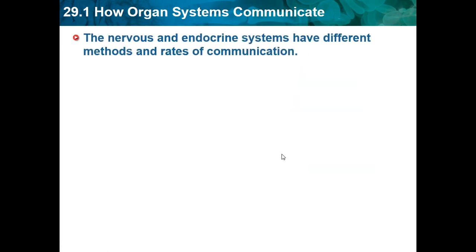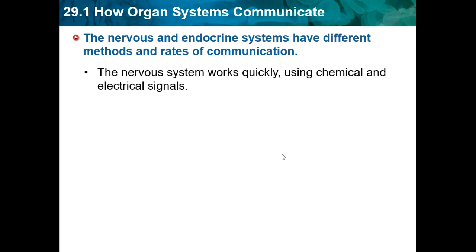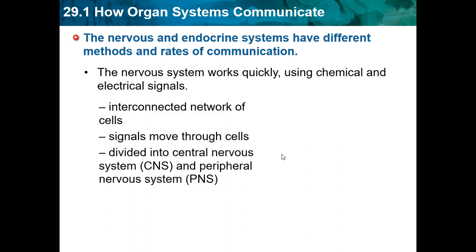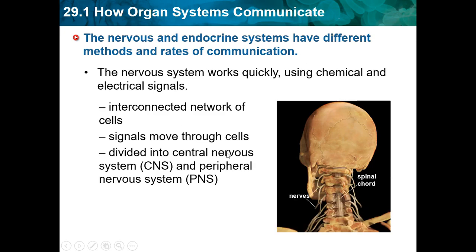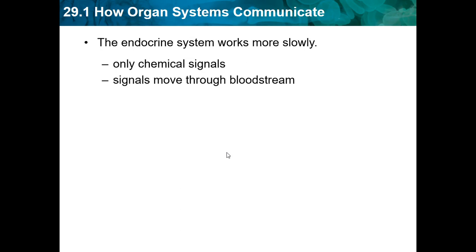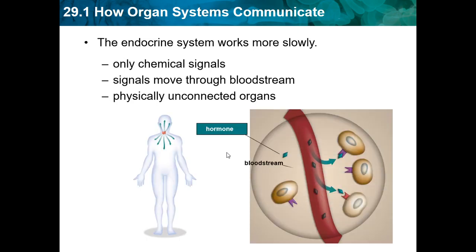The nervous and endocrine systems have different methods and rates of communication. The nervous system works quickly using chemicals and electrical signals through interconnected networks of cells — basically nerves. Signals move through cells and divide into the central nervous system (CNS) and the peripheral nervous system (PNS). The endocrine system works more slowly, using only chemical signals that move through the bloodstream. These chemical signals can be hormones, which tell the body to do specific things. The organs are physically unconnected.